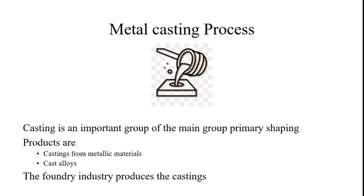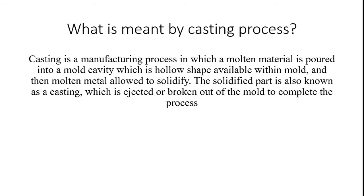Casting is an important group within the main group of primary shaping. Products such as castings from metallic materials and castings from cast alloys can both be produced with metal casting processes. The foundry industry produces castings. Casting is a manufacturing process in which a molten material is poured into a mould cavity — a hollow shape within the mould — and the molten metal is allowed to solidify. The solidified part, also known as a casting, is ejected or broken out of the mould to complete the process.